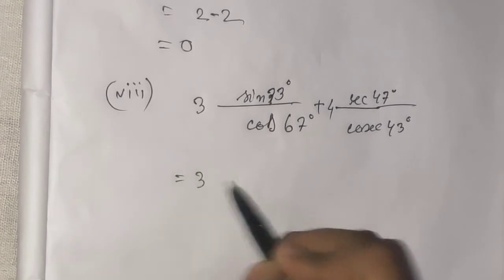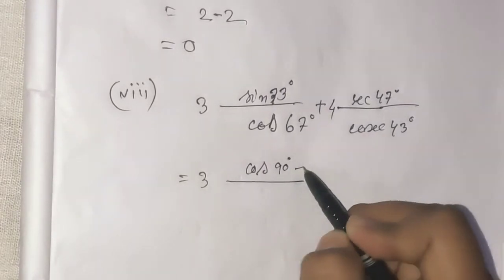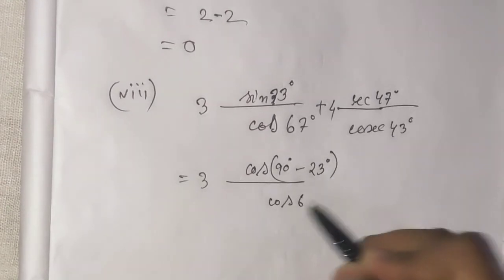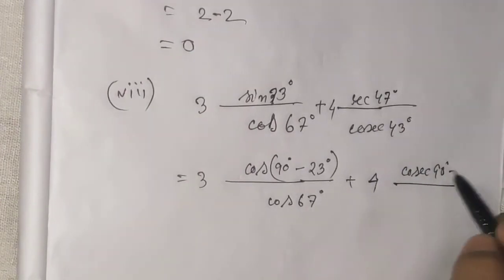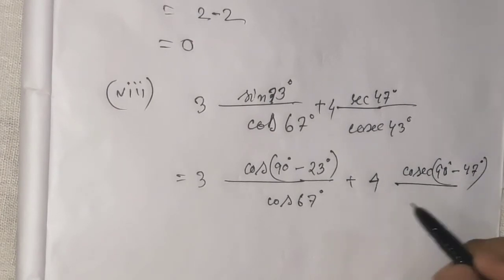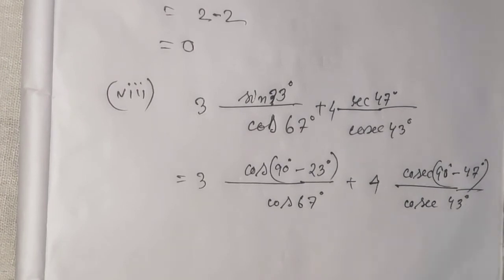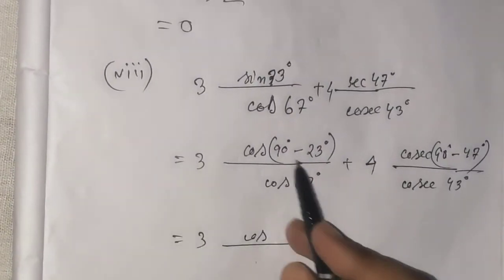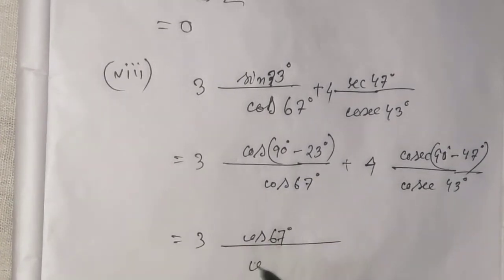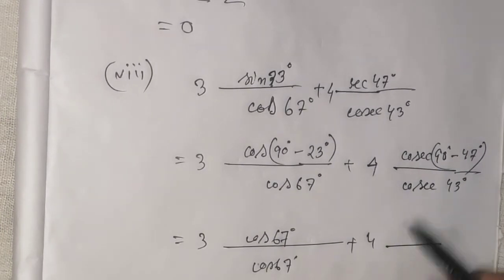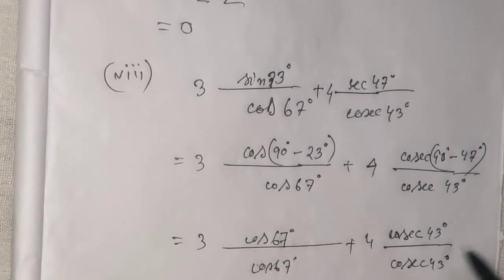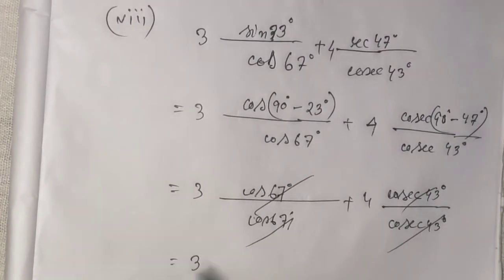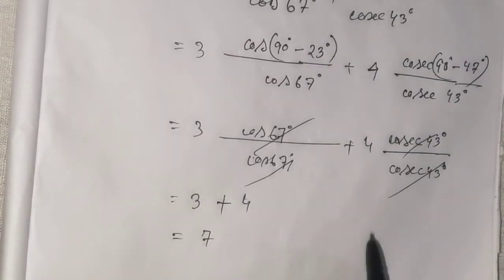For this: cos67° equals cos(90° - 23°) equals sin23°, so 3sin23° × sin23° equals 3sin²23°. And cosec43° equals cosec(90° - 47°) equals sec47°, so 4sec47° × sec47° equals 4sec²47°. Now 3 plus 4 equals 7.